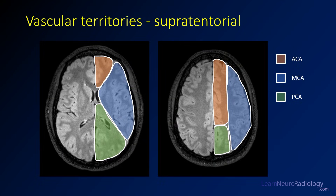Finally, let's review the vascular territories. In the supratentorial brain, the ACA territory covers the anterior frontal lobe hugging the midline. Posteriorly, the PCA or posterior cerebral artery territory also hugs the midline going higher. The largest vascular distribution in the supratentorial brain is the MCA territory — that includes a lot of the basal ganglia, lateral and inferior frontal lobes, and parts of the temporal and parietal lobes.